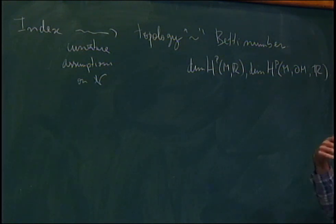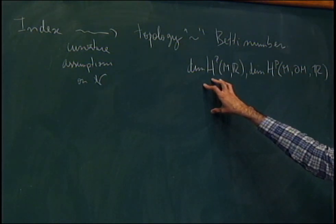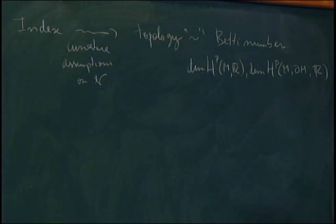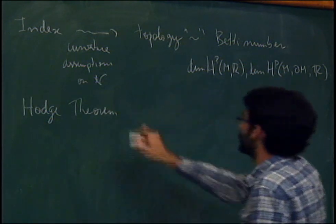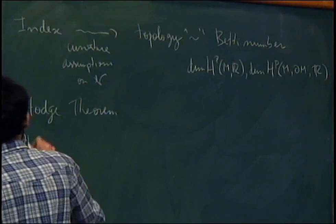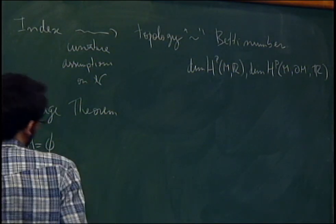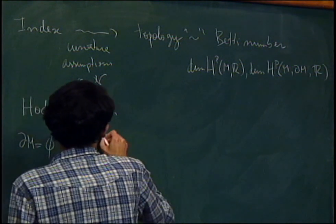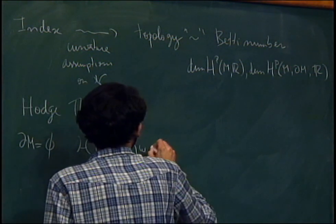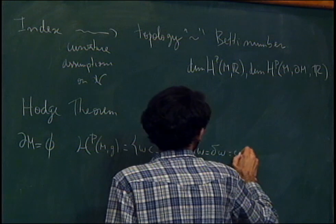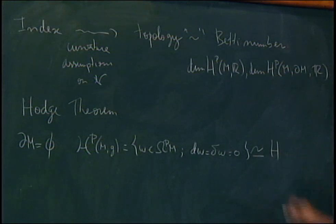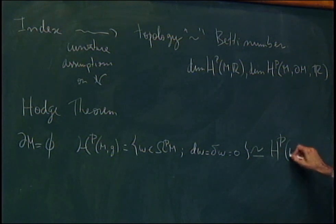Once I have a metric on M, I can find canonical representatives in each homology class. This is the content of the Hodge theorem. Hodge theorem tells us the following: for example, if I consider the case of surfaces without boundary, then the set of harmonic forms — the set of p-forms on M that are closed and co-closed — is isomorphic to the cohomology group.